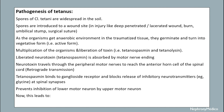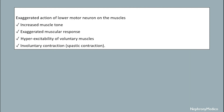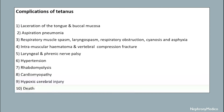Pathogenesis of tetanus: spores of Clostridium tetani are widespread in the soil and are introduced to a wound site during injury. They get an anaerobic environment in traumatic tissue and germinate into vegetative form. Multiplication of organisms with secretion of the toxin leads to tetanospasmin and tetanolysin. These are absorbed by motor nerve endings and transmitted, and tetanospasmin binds to ganglioside receptors and blocks release of inhibitory neurotransmitters at spinal synapses, leading to inhibition of the lower motor neuron by the upper motor neuron, resulting in exaggerated action on lower motor neurons causing increased muscle tone, exaggerated muscular response, hyperexcitability of voluntary muscles, and involuntary or spastic contraction.